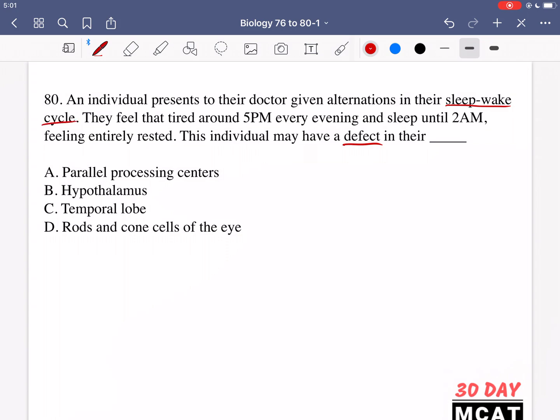Is it option A, parallel processing centers? No. The parallel processing centers are related to things like processing multiple signals that we get at once. Like, if we're looking at something and we see that there is color to what we're seeing.